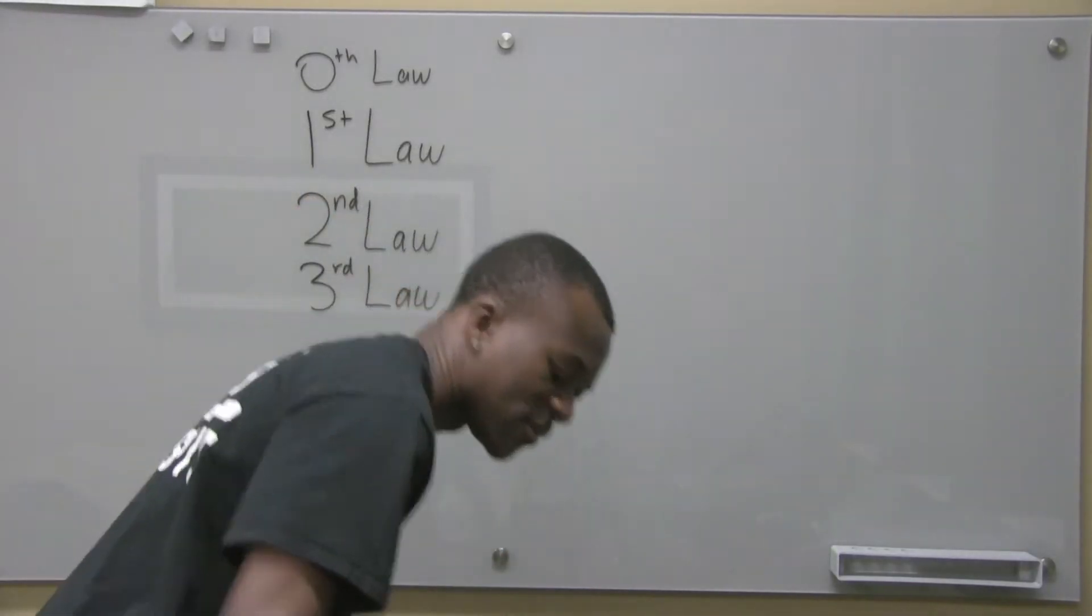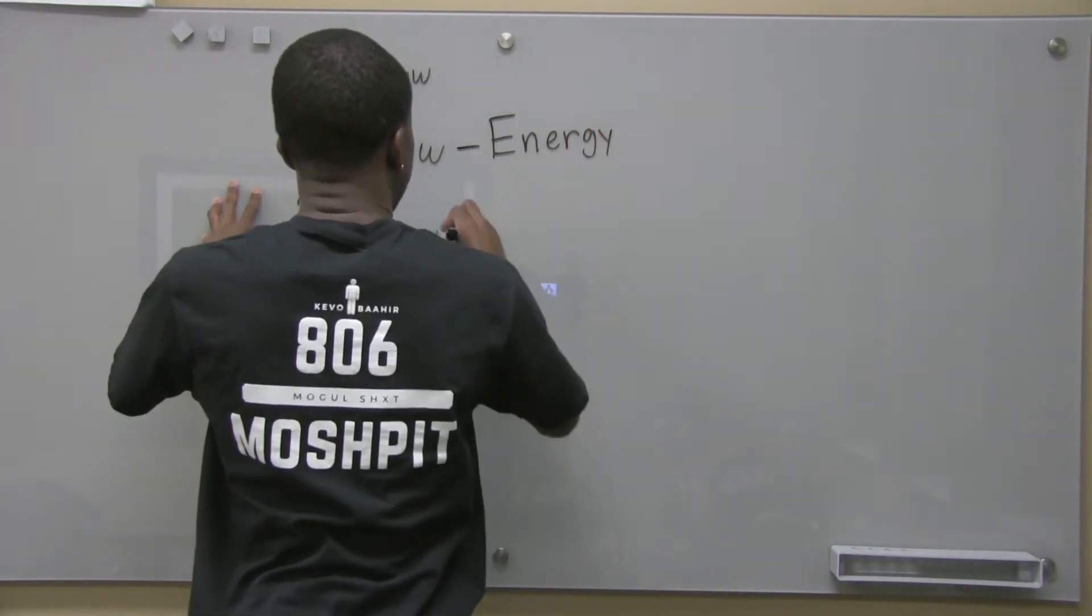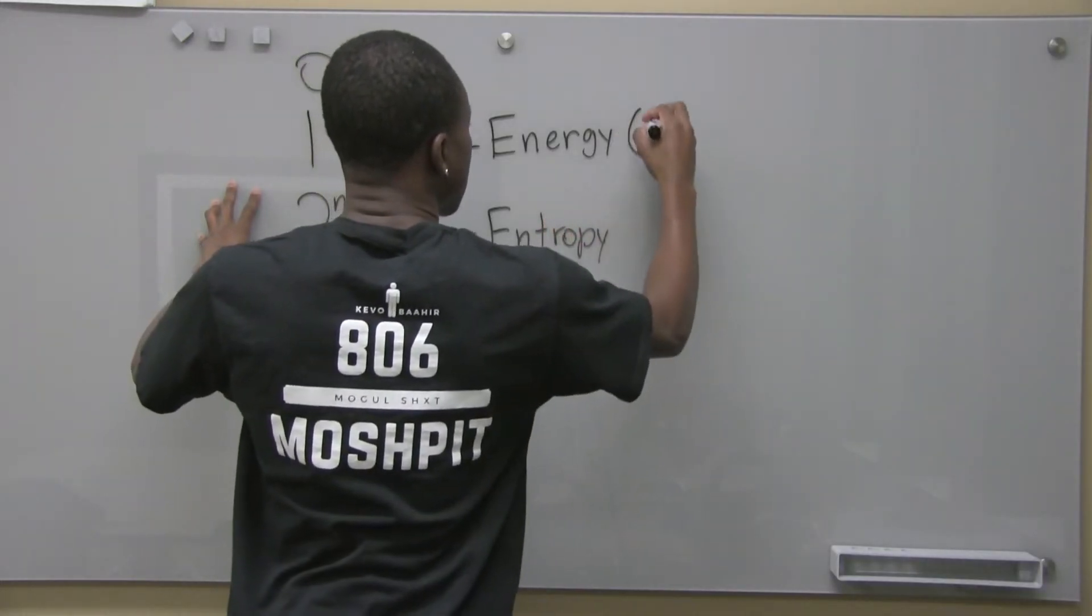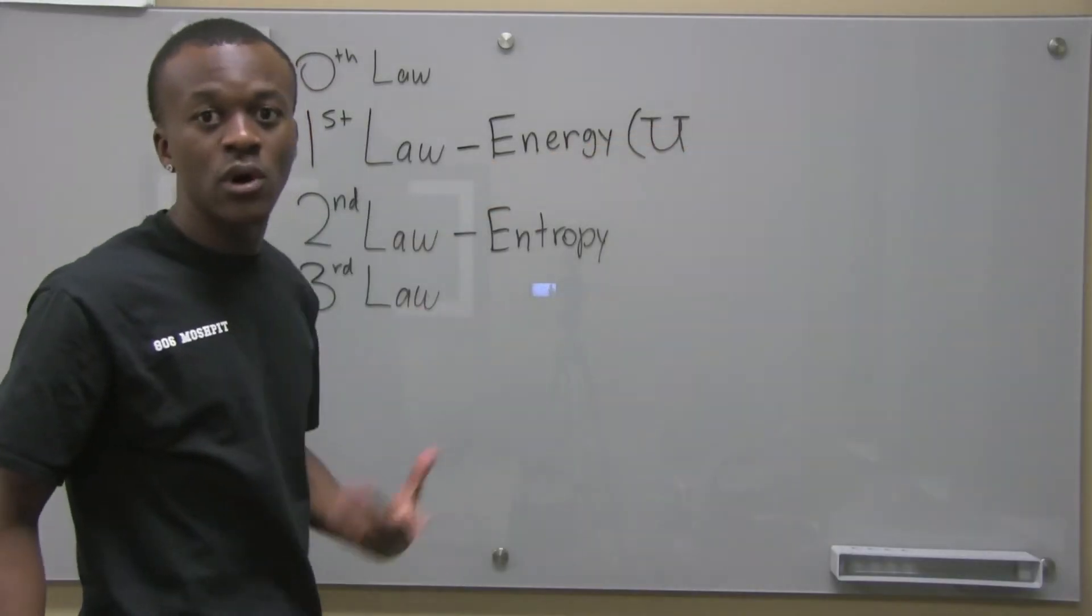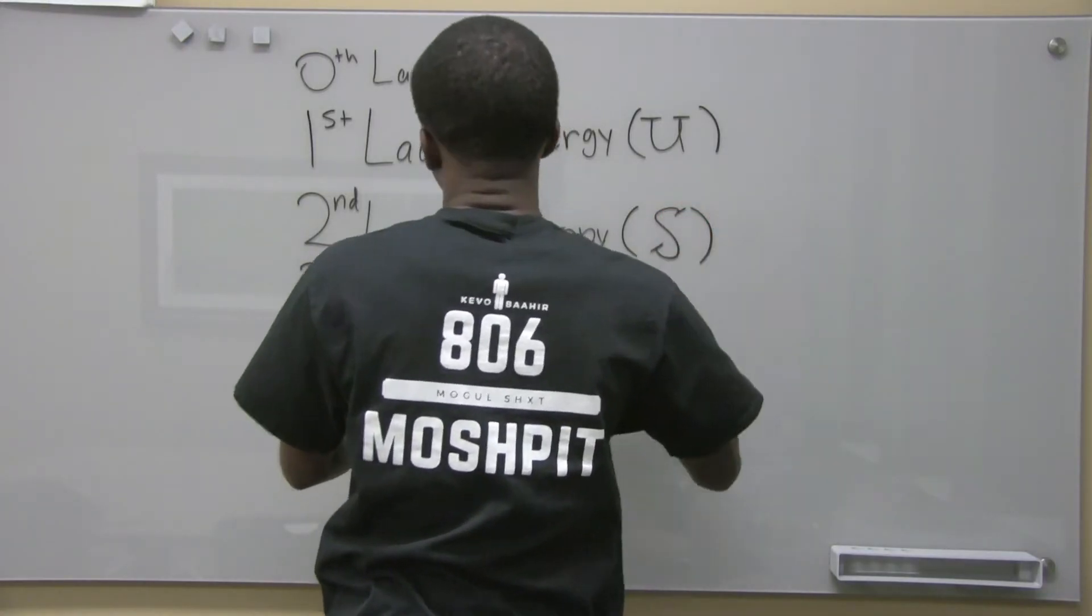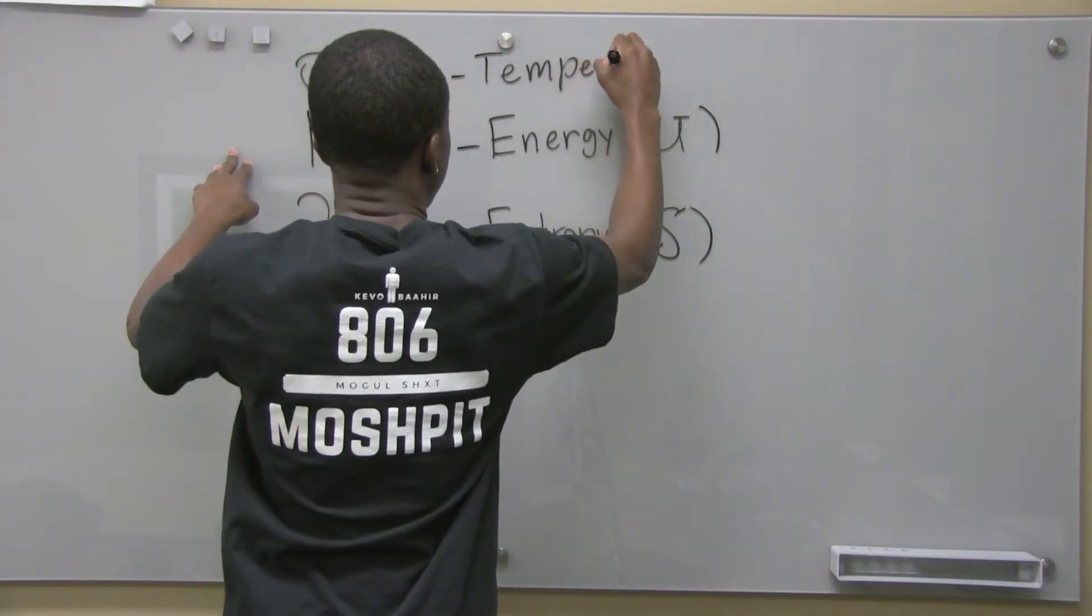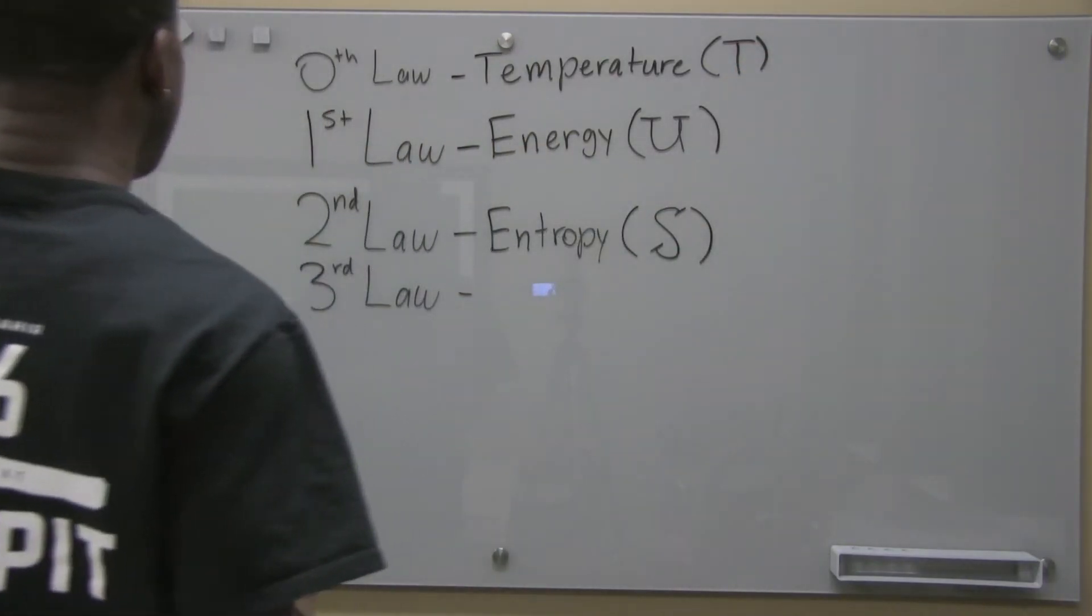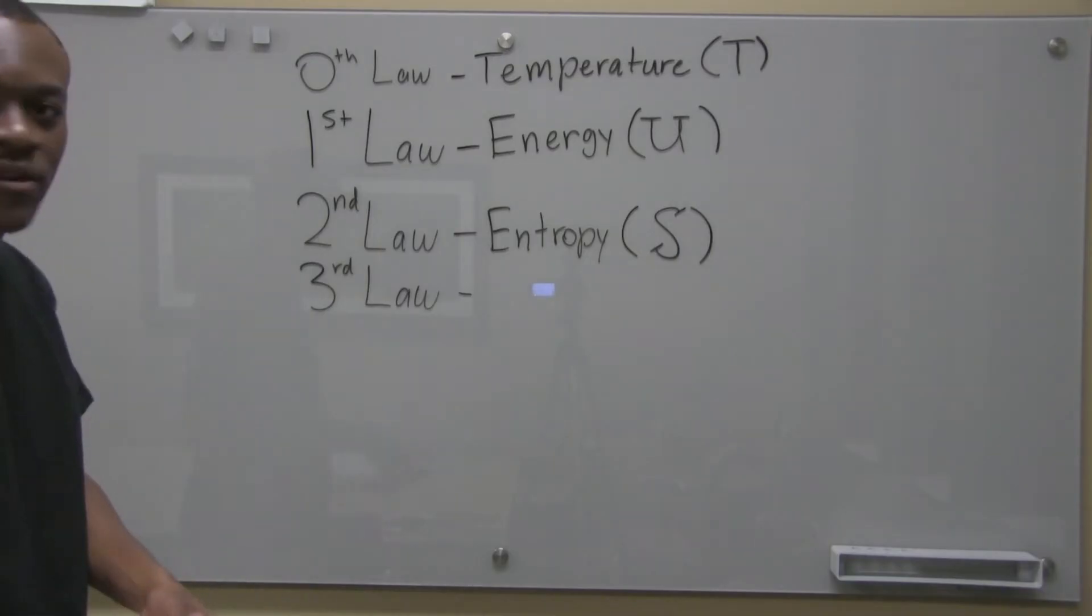The first law talks about energy. The second law talks about entropy. These are given by different letters. This is a capital U for energy, and I'm doing these lines on top of U on purpose. We'll see as we go along. This S is entropy. Now the zeroth law talks about temperature, and we can denote that with a capital T. The third law also talks about entropy, but it gives quantitative value to entropy. We're going to go more into these, but that was just to give you guys a brief idea.